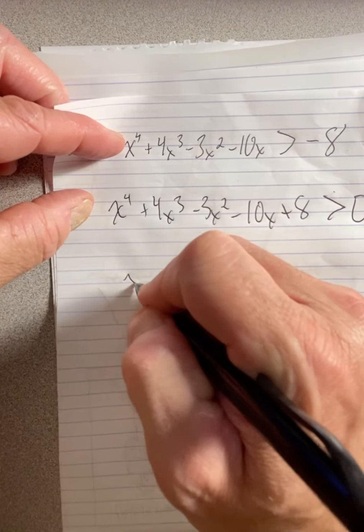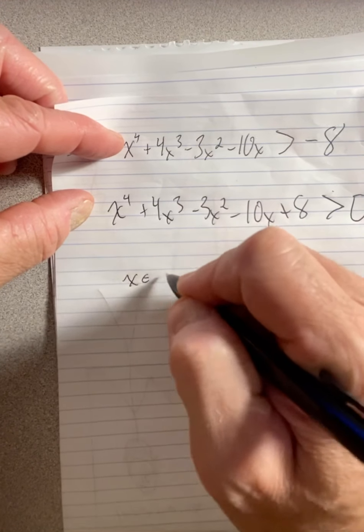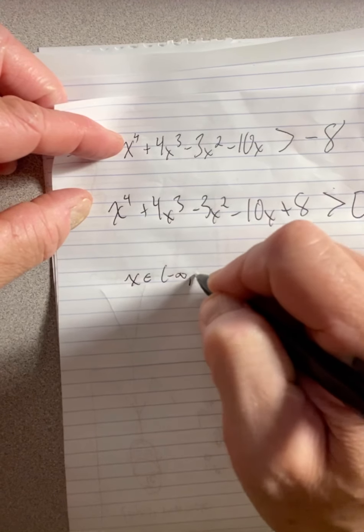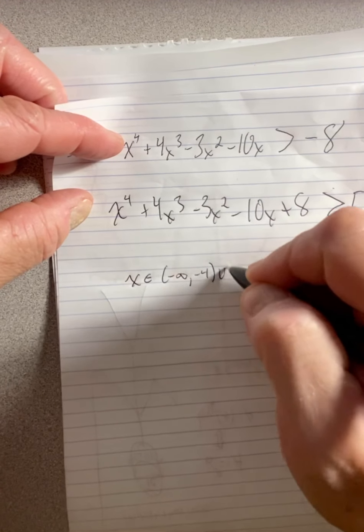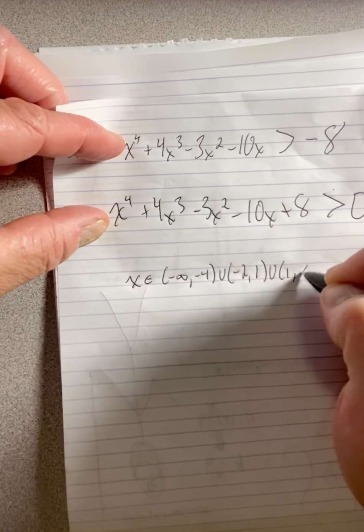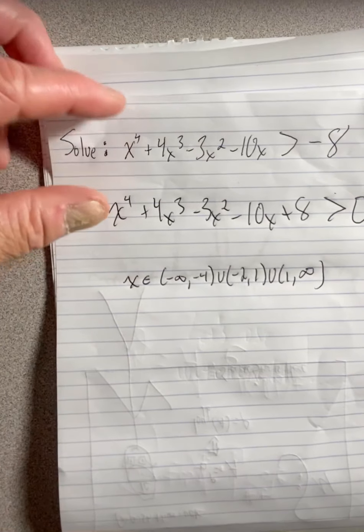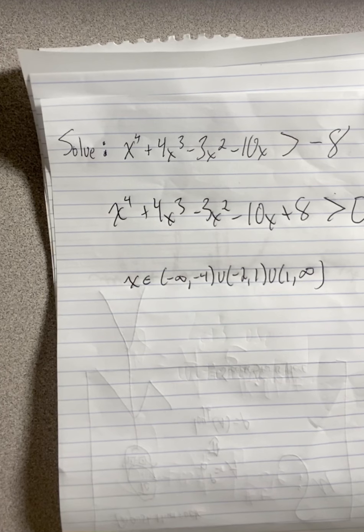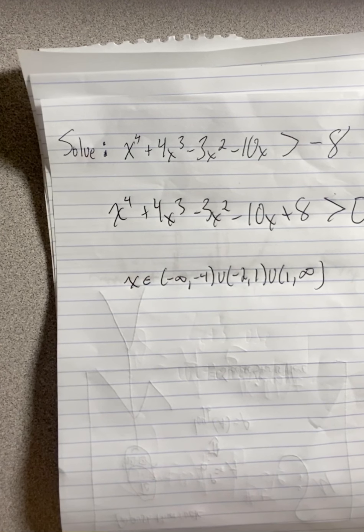So x is an element of negative infinity to negative four, union negative two to one, union one to infinity. There we used our witchcraft factory. Math made simple. Simpson Math.